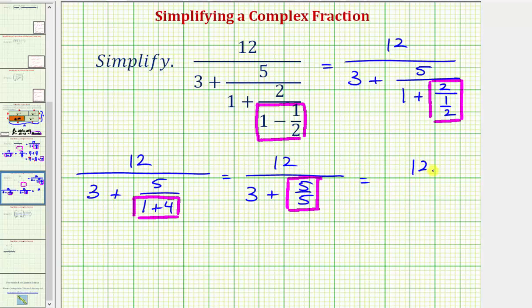So we have 12 over the quantity three plus one. And now three plus one equals four. So this simplifies to 12 over four, or 12 divided by four, which equals three.